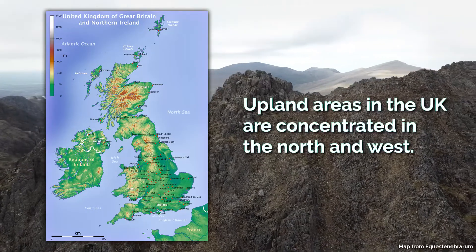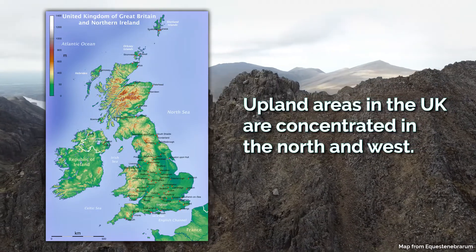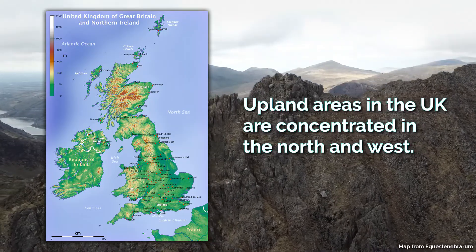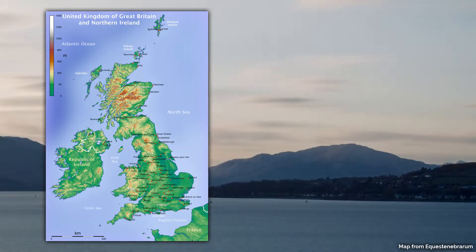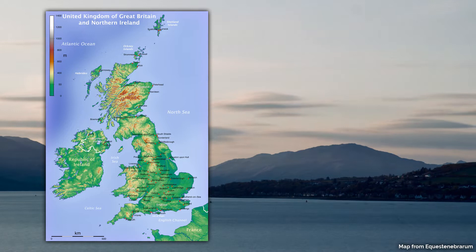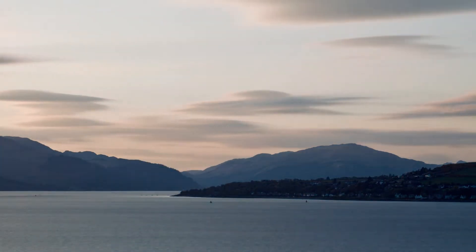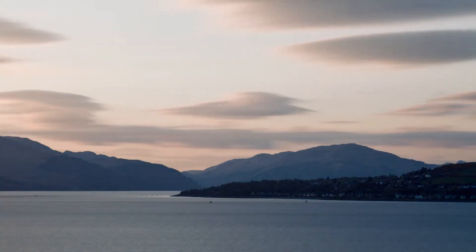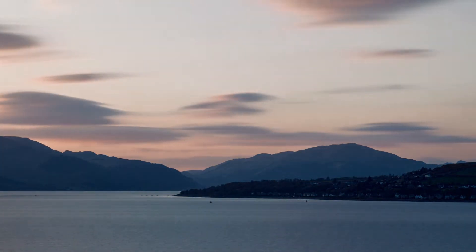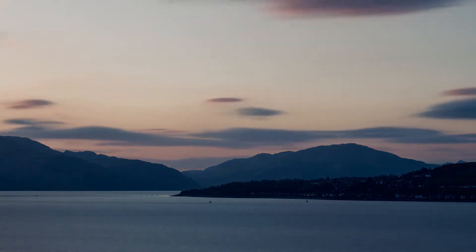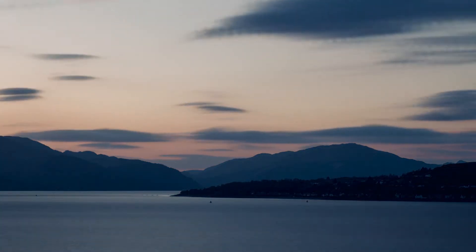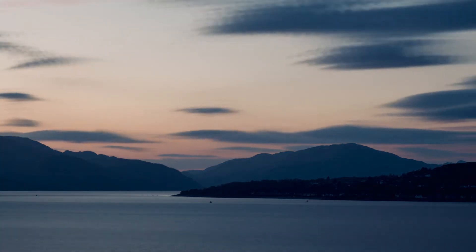As you can see on the map, upland areas in the UK are concentrated in the north and west, covering most of Scotland, Wales and Northern England as well as parts of South West England. Many of these areas are famous for their natural beauty, such as the Scottish Highlands, Grampian Mountains, the Lake District, Dartmoor, Snowdonia and the Brecon Beacons.